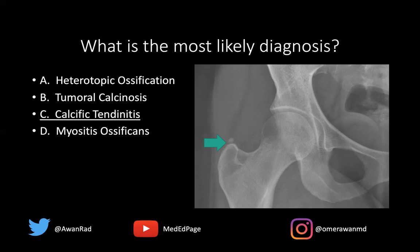This is not a case of heterotopic ossification because if you look here, this is really globular and amorphous. There's no trabeculae in here, there's no cortex here — so this is not bone. When you have bone in an abnormal location, that's usually indicative of heterotopic ossification.